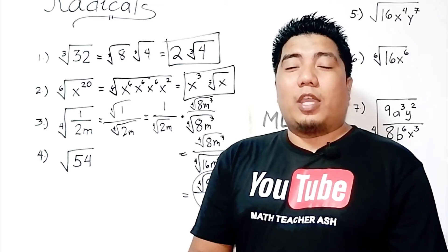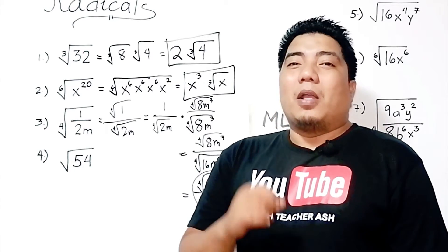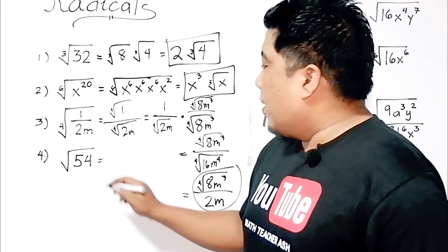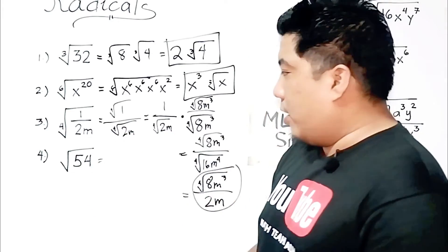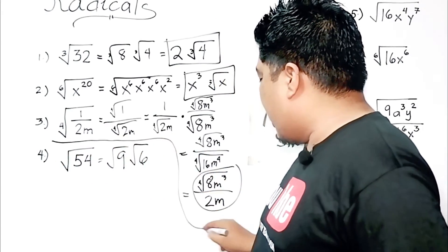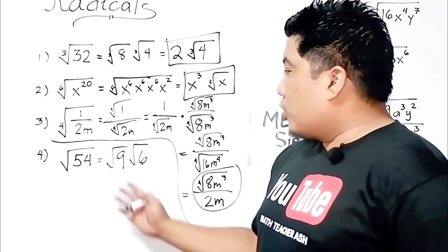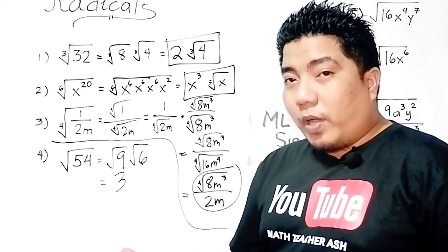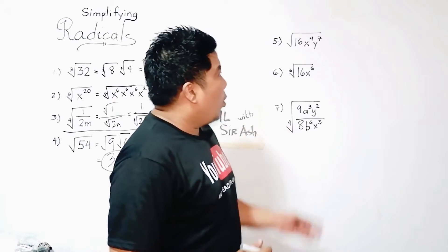For the fourth example, we have the square root of 54. Since 54 is not a perfect square, we find factors of 54 where one is a perfect square. We can use 9: so 54 = 9 × 6, giving us the square root of 9 times the square root of 6. The square root of 9 is 3, and the square root of 6 is not a perfect square so we copy it. Final answer: 3 times the square root of 6.